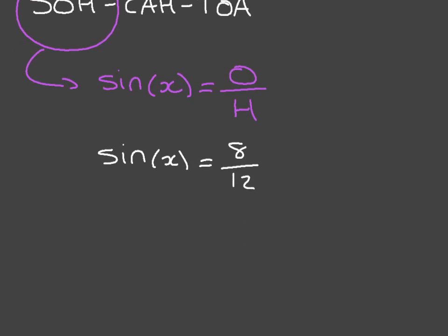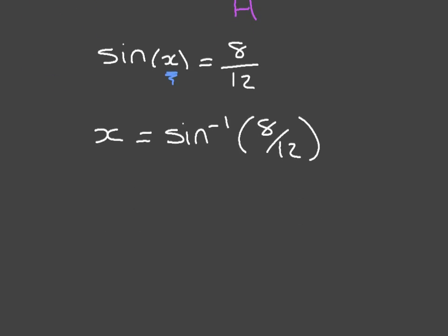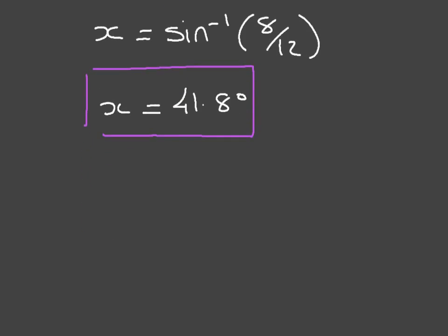Just as in the previous examples, what we're looking for is the angle inside the sine function. To get it out, we use the inverse sine function, and we write x is equal to the inverse sine of 8 over 12. Plugging that into our calculators and rounding to one decimal place, we find that x is equal to 41.8 degrees. We complete the diagram: the side length was 8, the hypotenuse was 12, and we have just found this interior angle, which is 41.8 degrees.